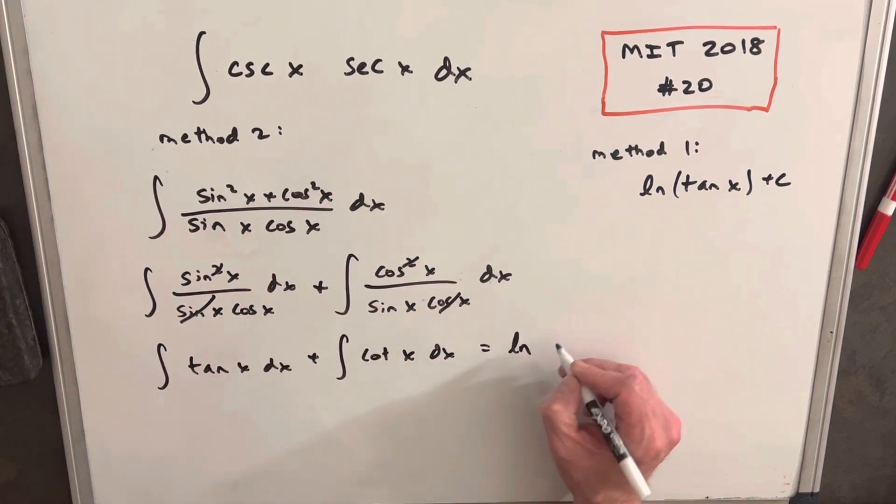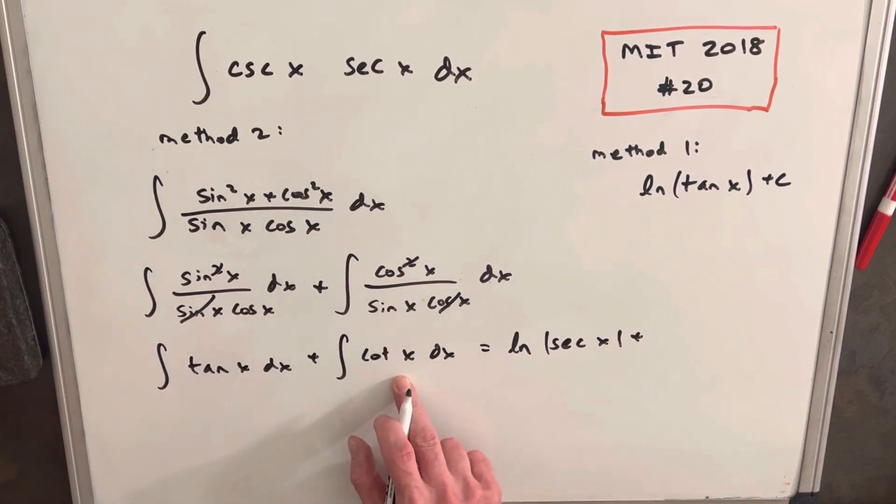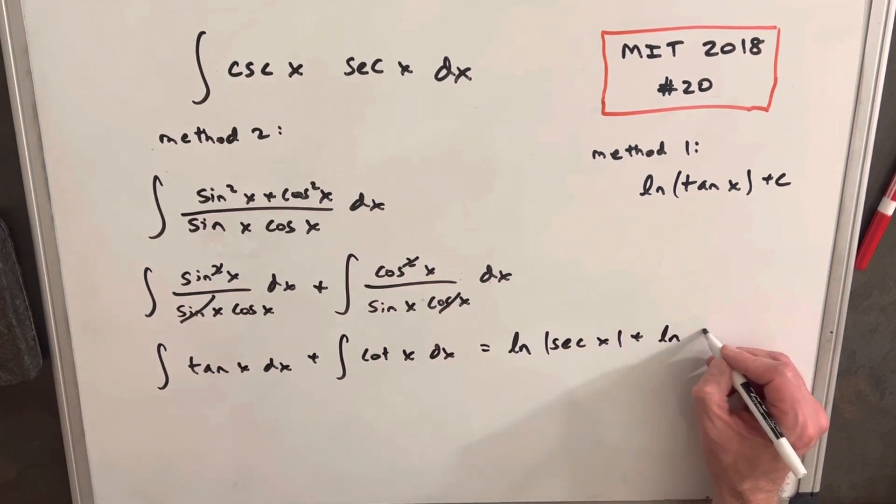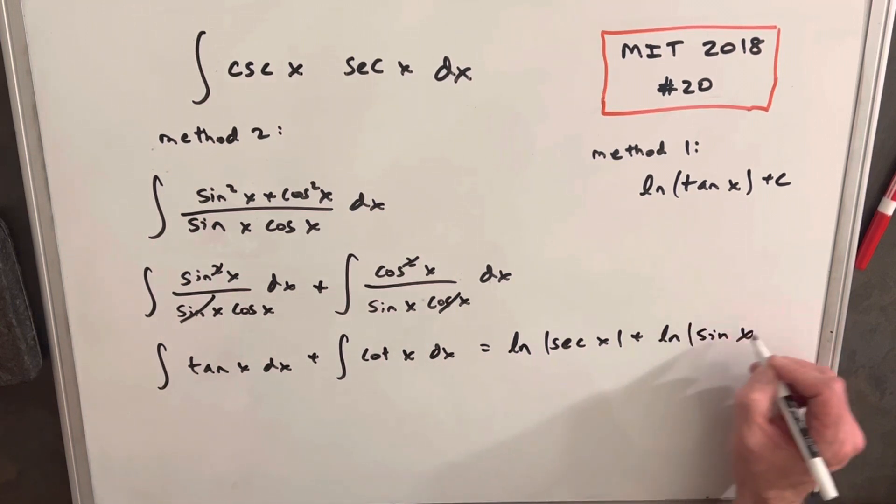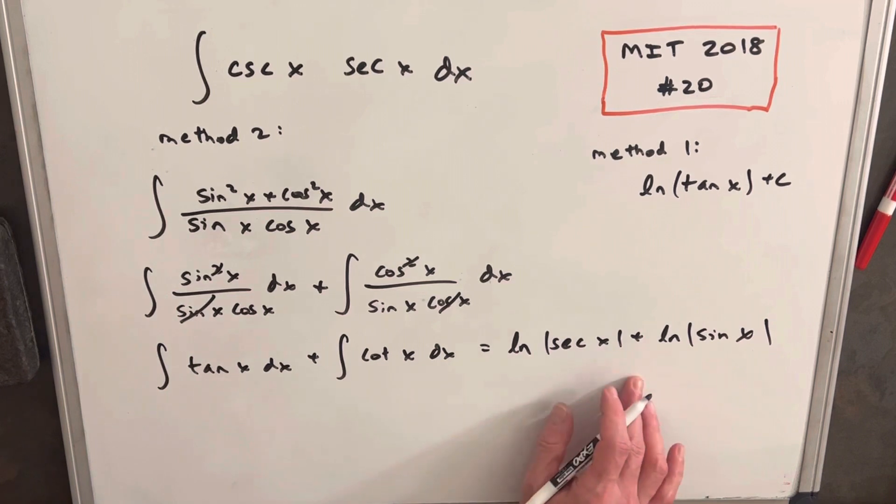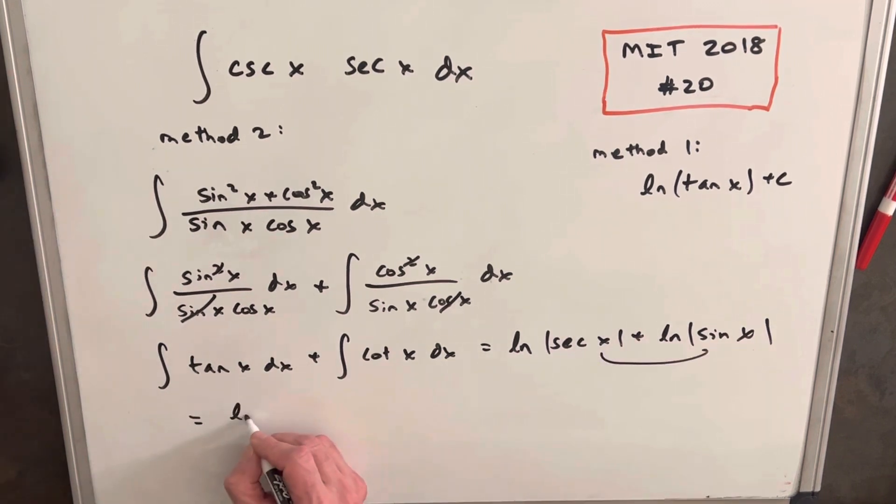We know the integral of tangent is ln secant x. And then we have our integral for cotangent. That's going to be actually ln sine of x. Then with the properties of logs, we can multiply. We can bring these two together and multiply.